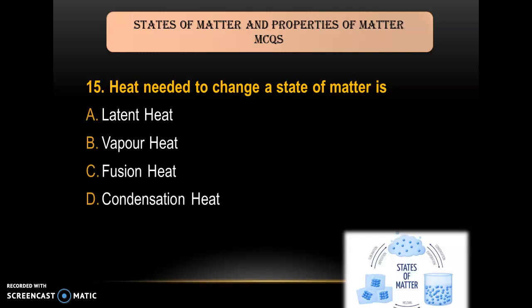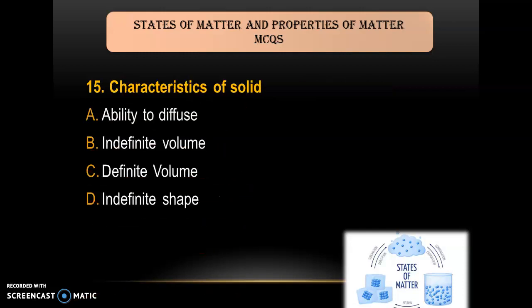Question 15: The heat needed to change the state of matter is — A) latent heat; B) vapor heat; C) fusion heat; D) condensation. As we all know, the heat required to change one state of matter to another is the latent heat. So the answer is A — latent heat.